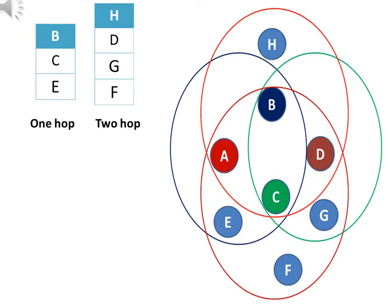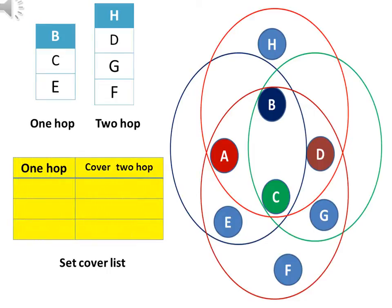Now, we will generate a set cover list and place all one-hop neighbors in the first column. In the second column, i.e., two-hop covered nodes, place one by one all the adjacent nodes of all one-hop neighbors. Node B has adjacent nodes H and D. Node C has adjacent nodes D, G, and F. This will continue for node E. The adjacent node of node E is node F.